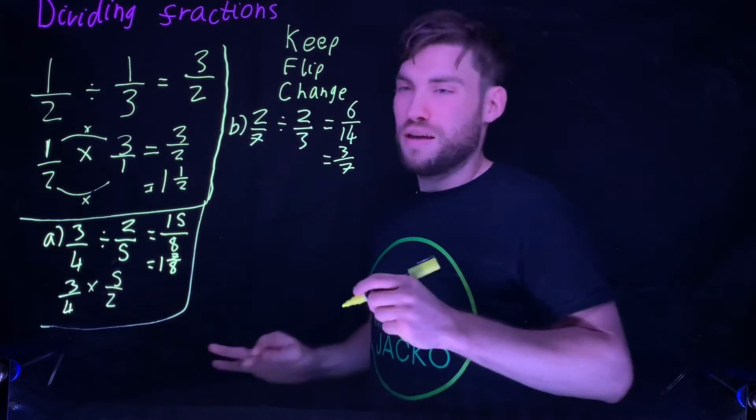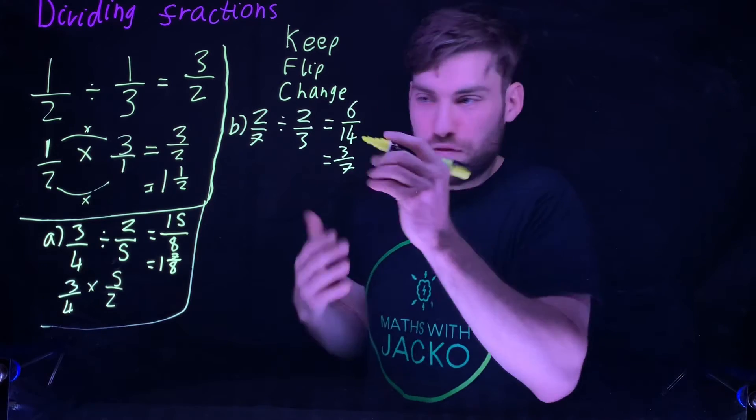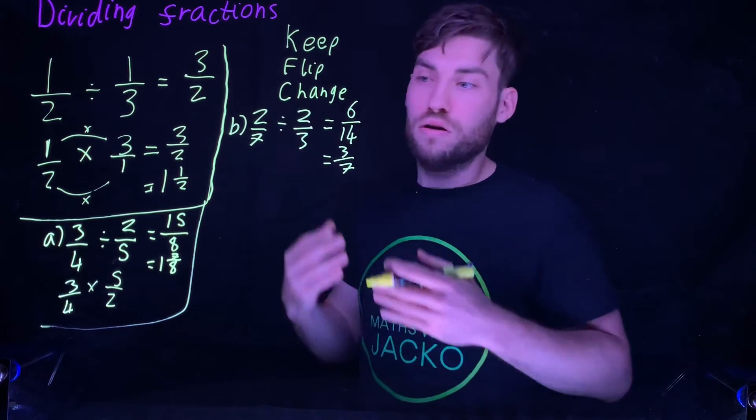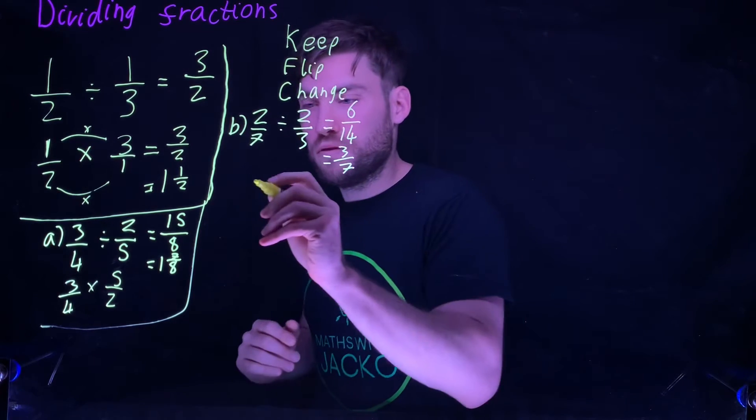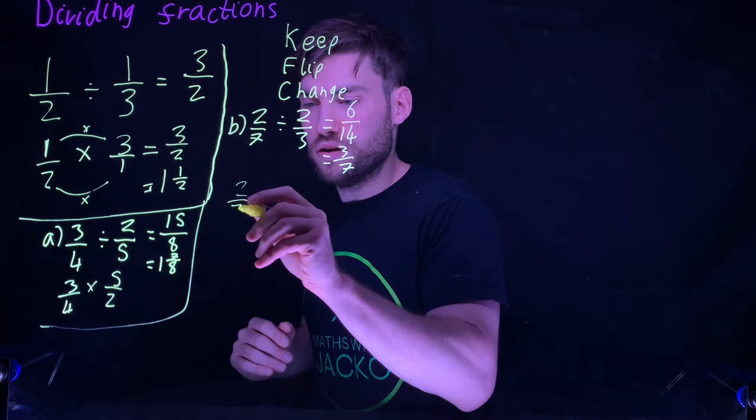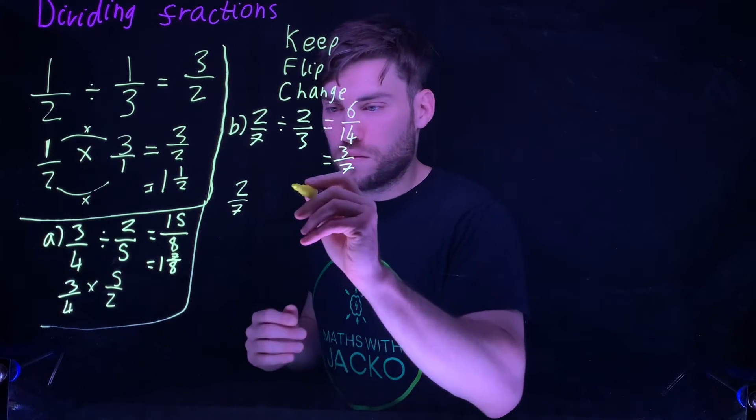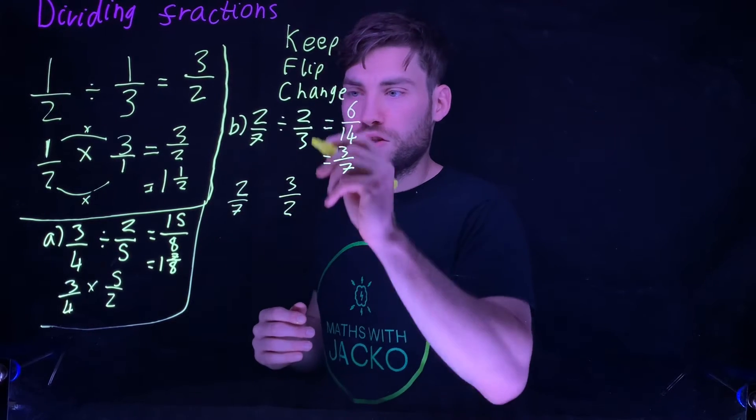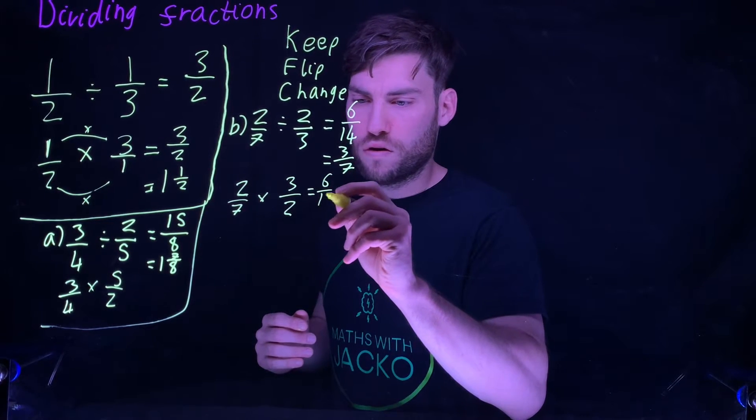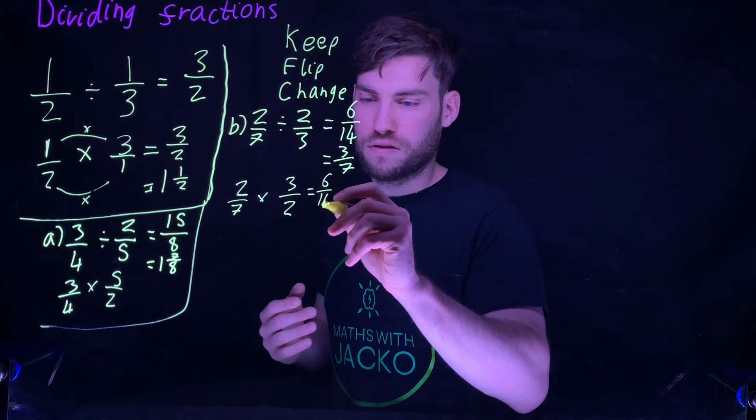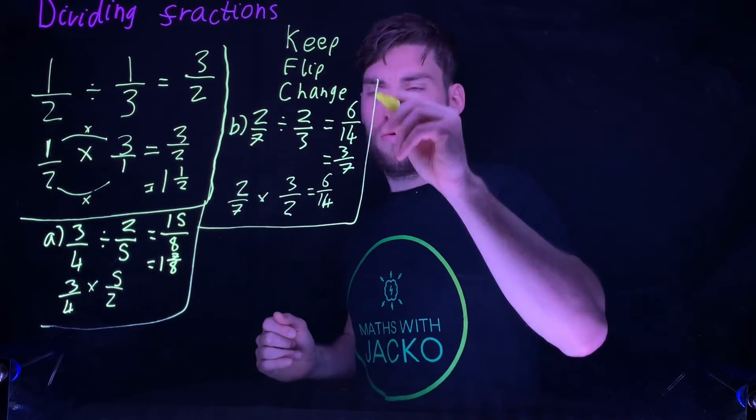Your answer should be six over fourteen, which then simplifies to three sevenths. I'll do another video on simplifying fractions where I go in more detail. Keep, Flip, Change - keep the first one, two over seven, flip the second one so two thirds is now three over two, change the divide to multiply. You're left with six over fourteen, which simplifies to three sevenths.